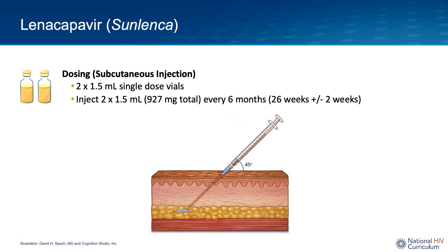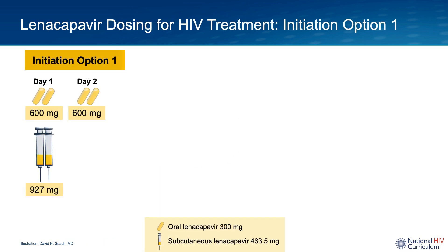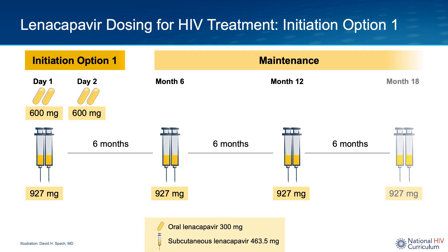Ideally, this is given every 26 weeks, but it's acceptable to give up to two weeks before or after week 26. The subcutaneous injection should be given in the abdomen at least two inches away from the navel. When used for HIV treatment, there are two initiation dosing options. With initiation option one, on day one the patient takes two 300 mg linacapavir tablets (600 mg total) and receives two 1.5 ml subcutaneous injections (927 mg total). On day two, an oral dose of two 300 mg tablets (600 mg total) is taken again. The maintenance dosing then consists of two 1.5 ml subcutaneous injections every six months, with the first maintenance dose given six months after the day one initiation injections, for a total of 927 milligrams each time.